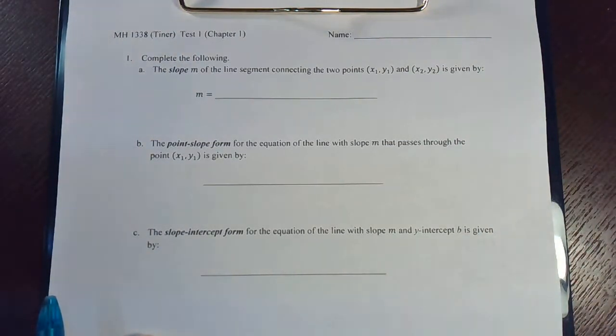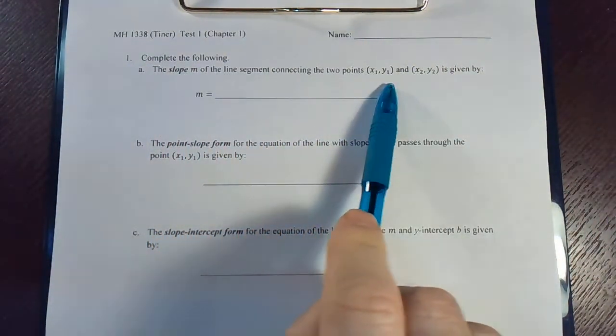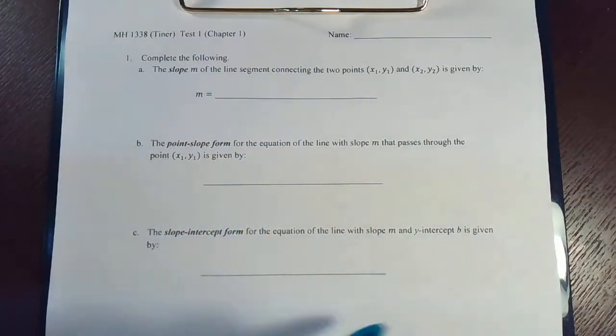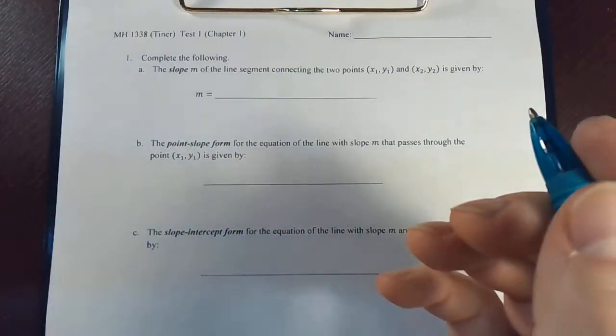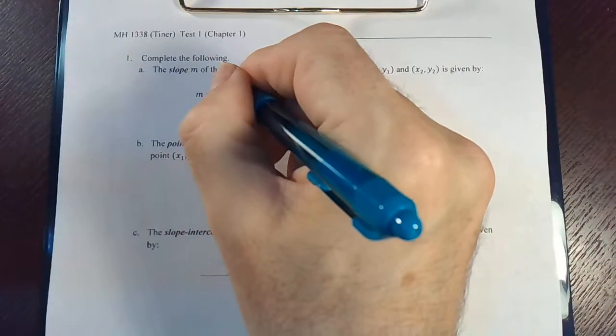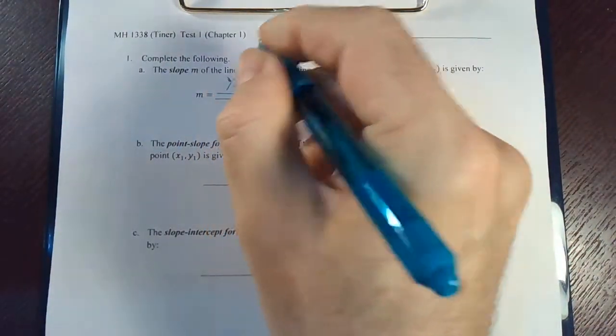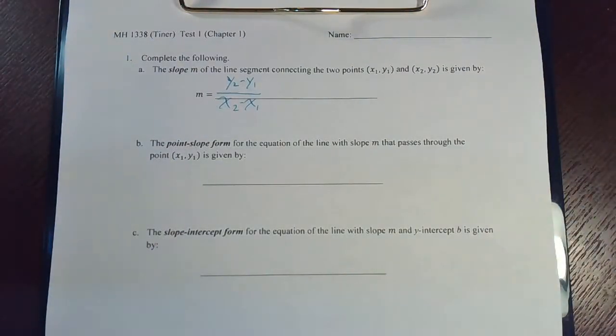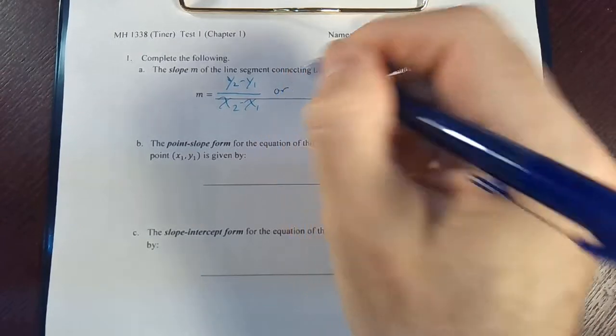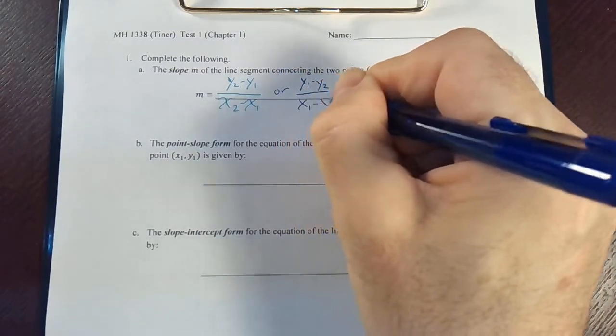The first thing we're going to do is complete some definitions. The slope m of a line segment connecting two points (x1, y1) and (x2, y2) is given by m equals... this is the slope formula. You can think of it as rise over run, where we take the difference in the y's, y2 minus y1, over x2 minus x1. Or you could write it as y1 minus y2 over x1 minus x2.